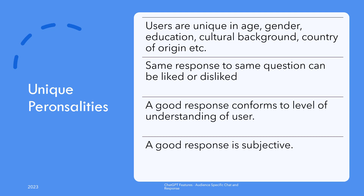Conversely, the user might be researching a topic for others. Taking an example directly from OpenAI, let's say a third grade teacher is searching for students of her class — the standard response won't work anymore. It needs to be brought down to the level of understanding of third grade students. Another example is that of a content marketing expert trying to come up with a product description for a manufacturing company to use in an upcoming advertising campaign.